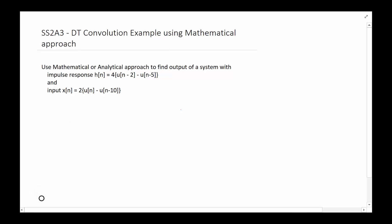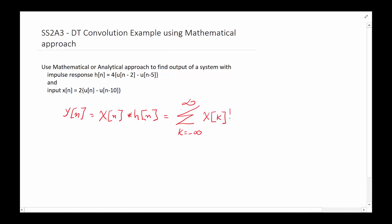First of all, we're going to do a convolution. It really doesn't matter which way we go, but let's go with the standard way. So y of n is going to be equal to the convolution of x of n with h of n. We know this is shorthand for writing the summation — summation of k going from minus infinity to infinity of x of k multiplied by h of n minus k.